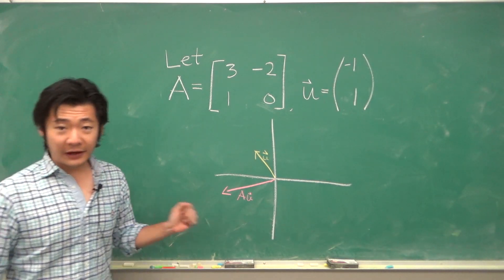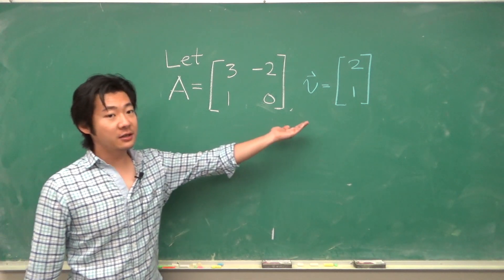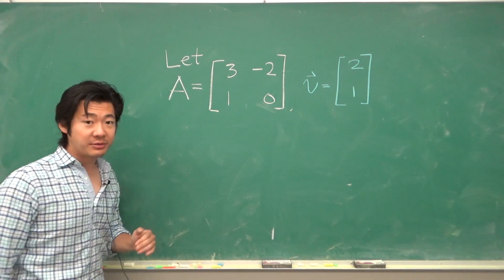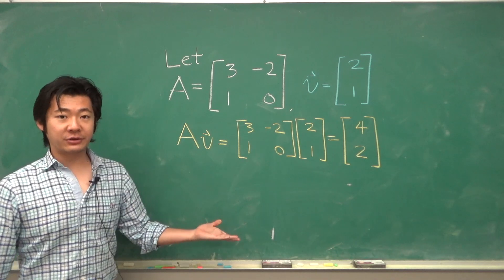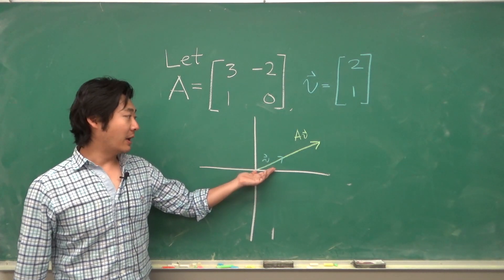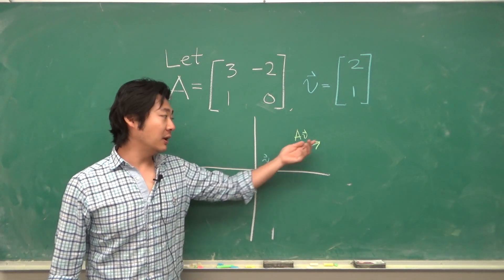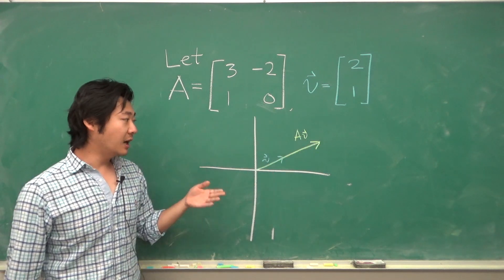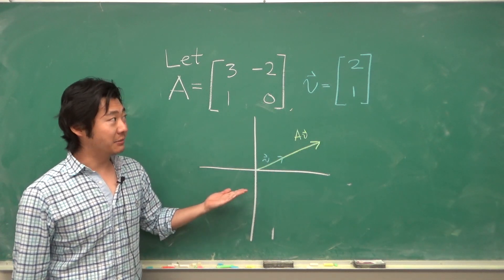Now let's consider another vector. Let's consider the vector V, which is 2, 1. Then A times V is the vector 4, 2. So geometrically, V gets mapped to a vector AV, which is in the same direction, and it's basically just 2 times the vector V.